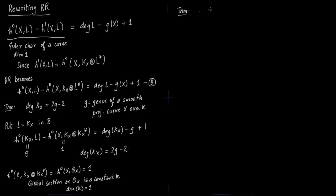So now another theorem. Say x is a smooth projective curve over k. L is a line bundle on x. Now if degree of L is greater than or equal to 2g-1, then you have h0 of x, L is equal to degree of L minus g plus 1.